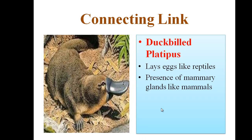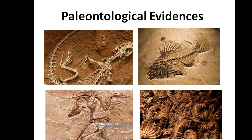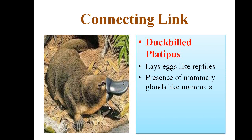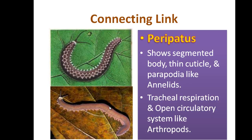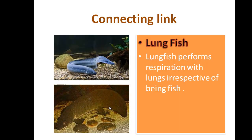The next evidence is connecting links — organisms which show characteristics of two different groups. For example, the duckbill platypus is a connecting link between reptiles and mammals: like reptiles, they lay eggs, and like mammals, they have a mammary gland for milk secretion. Peripata is a connecting link between annelidas and arthropoda — it shows a segmented body, thin cuticle, and parapodia like annelidas, while showing tracheal respiration and an open circulatory system like arthropodas. The third connecting link is lungfish, which performs respiration with lungs despite being a fish, showing a type of respiration similar to human beings.